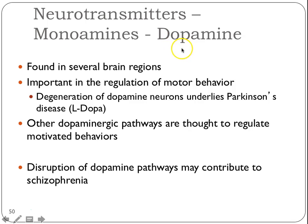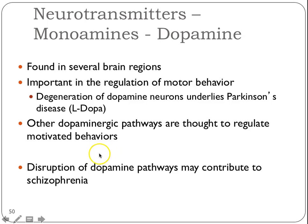Dopamine helps regulate motor behavior. When you lose the neurons that make dopamine, one of the things you end up with is Parkinson's disease. They'll try to give patients something called L-Dopa, a precursor to dopamine that the body can easily convert, to increase dopamine levels in the brain and reduce Parkinson-like symptoms. This works for a while, but as the disease progresses it's not enough and other remedies may be needed. Other dopamine pathways regulate motivated behavior, so part of depression is not feeling like doing anything — dopamine is implicated in mood disorders as well.